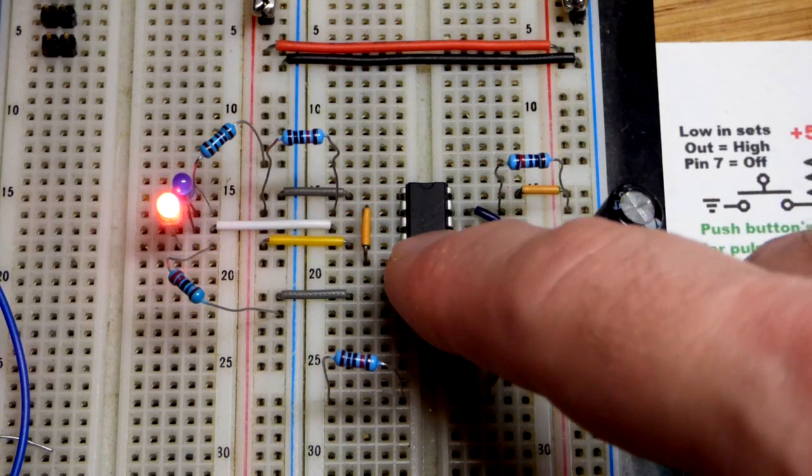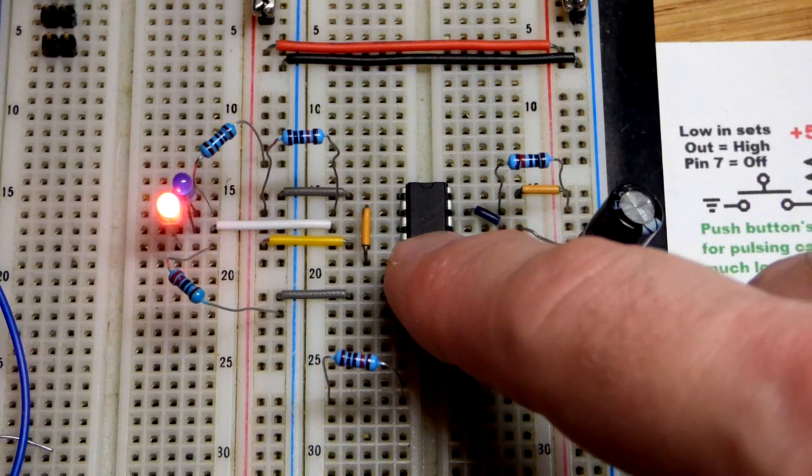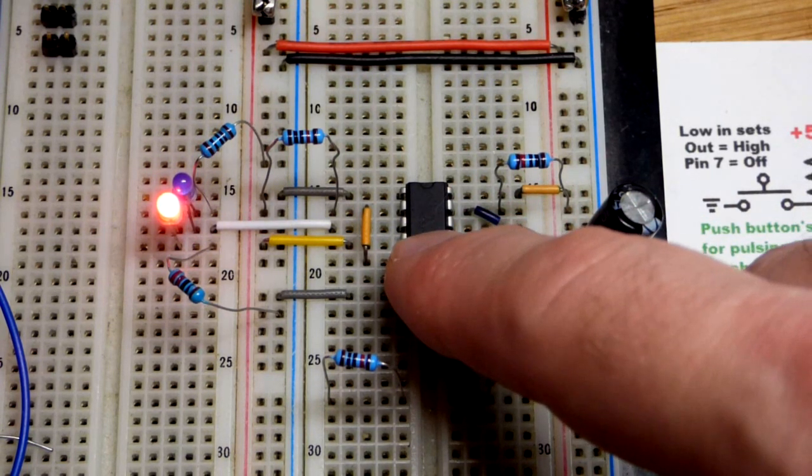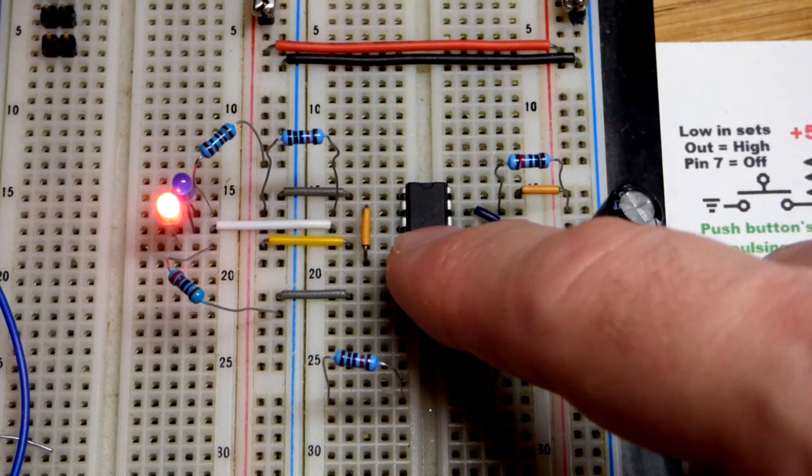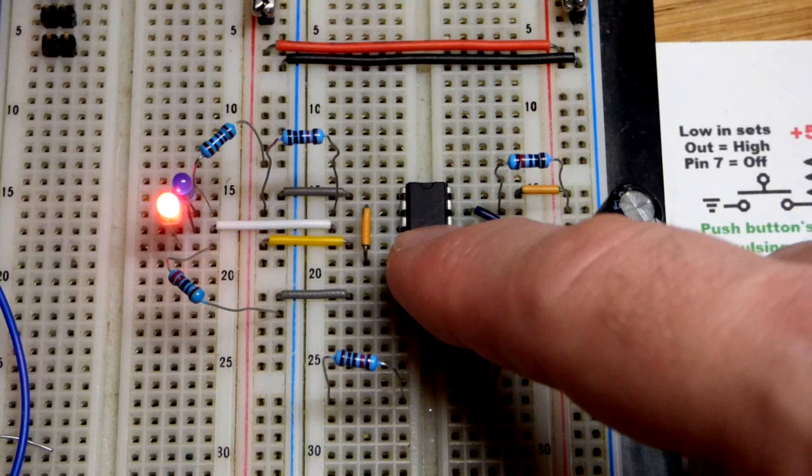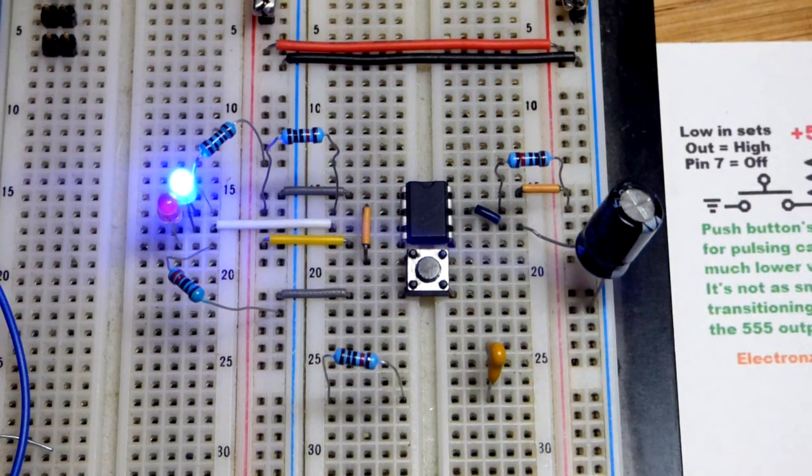If the output is only high for a brief period of time but it's quicker than what you release the switch, as you can see here, the output just stays high. So we're going to modify this.